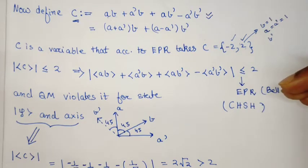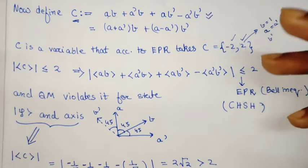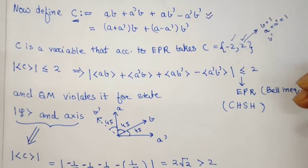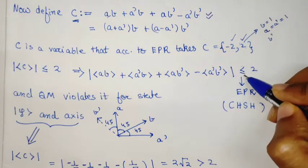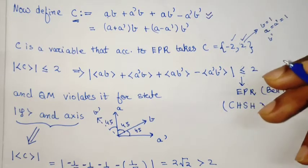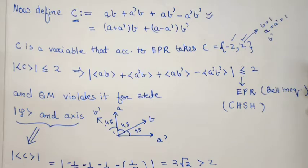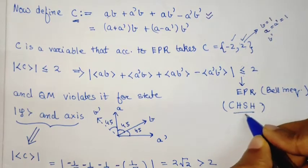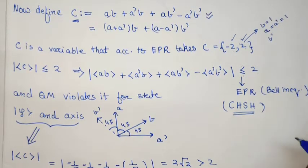This inequality uses the fact that these variables follow a deterministic property - each variable always takes a definite value of +1 or -1. This is a classical inequality that EPR predicts, called the CHSH inequality.